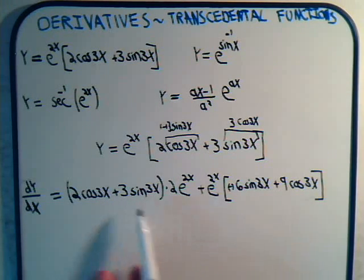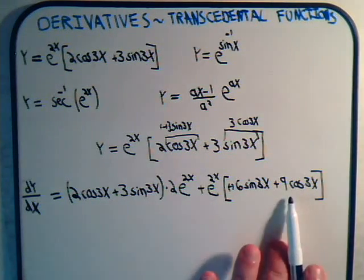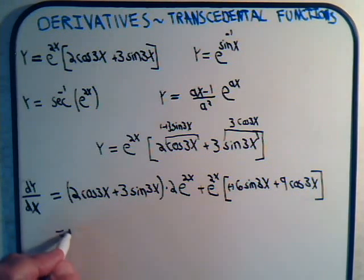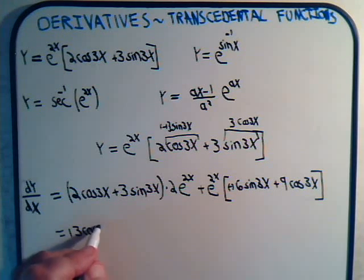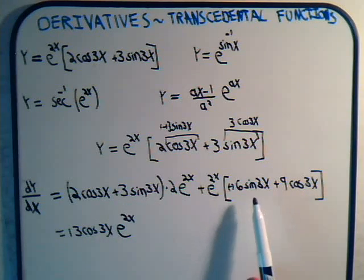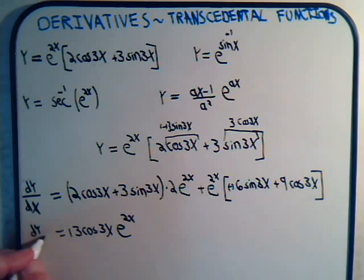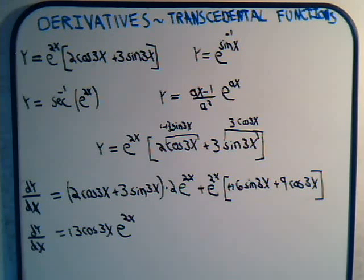Both parts are being multiplied by e to the 2x. Now we simplify by collecting like terms. For cosine of 3x: from the first part we get 4 cosine 3x (2 times 2) and from the second part 9 cosine 3x, giving 13 cosine of 3x times e to the 2x. For sine of 3x: we have 6 sine 3x minus 6 sine 3x, which cancel. So dy/dx equals 13 e to the 2x times cosine of 3x. It's just applying the rules step by step — that's our answer. Let's look at the next problem.